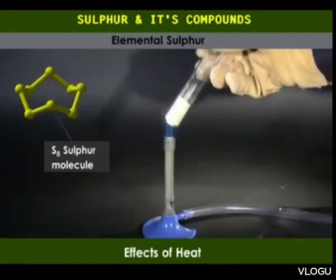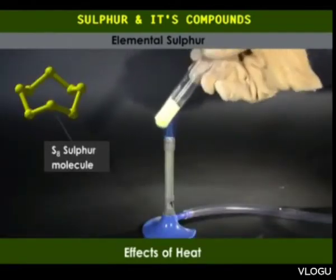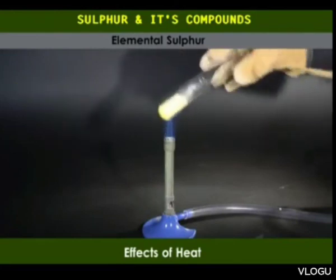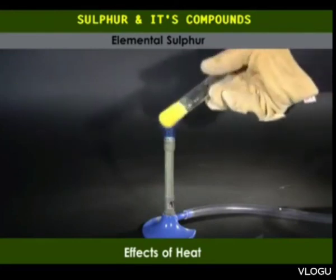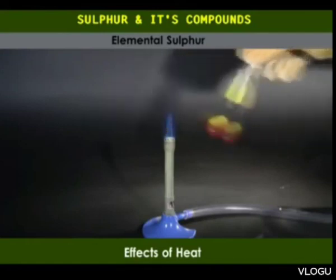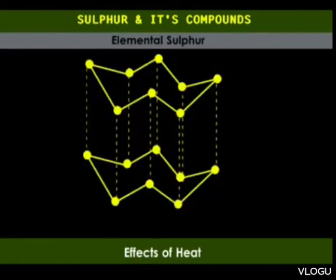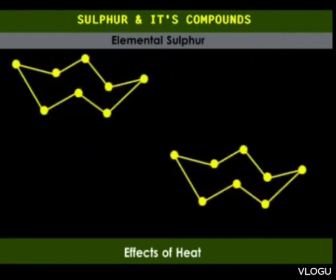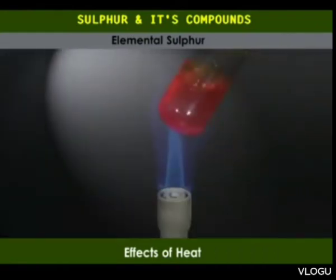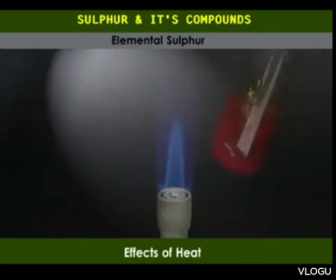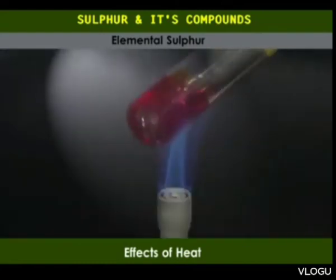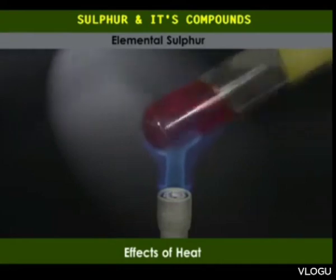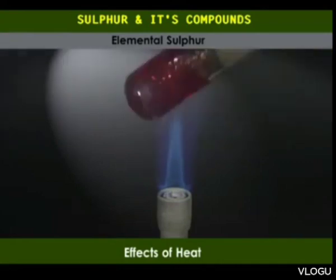When sulfur is heated, it melts at 113 degrees Celsius into a clear pale yellow liquid that flows easily. At this point, the intermolecular forces are broken, separating the individual molecules resulting in liquid sulfur. On further heating, the liquid darkens, becoming reddish brown and very viscous, hardly flowing.